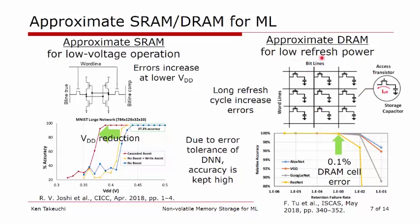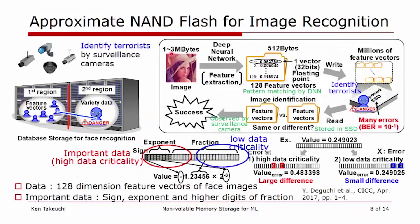Now let's go on to non-volatile memories — this is the primary part of this presentation. Let's think about face recognition in a security system. In storage, there is a huge amount of image databases, and we can detect important or dangerous persons by referring to data in SSDs. In this example using floating point format, the sign or exponent or higher-value bits are important because if they change, the image itself will change significantly. But the lower-significance bits are not so important. So we propose value-aware data mapping.